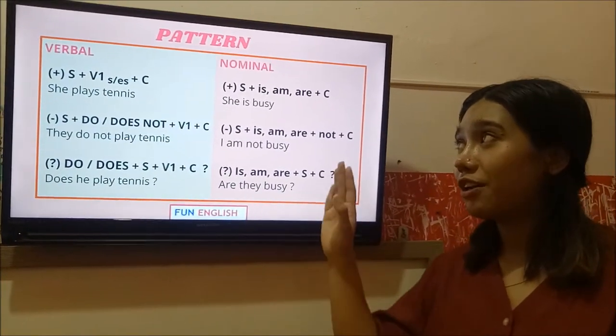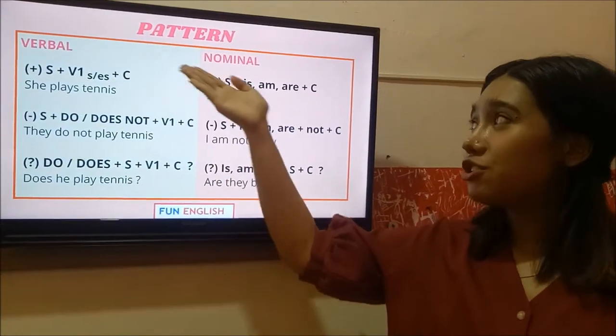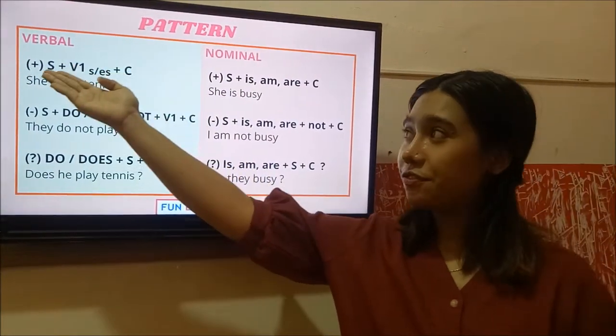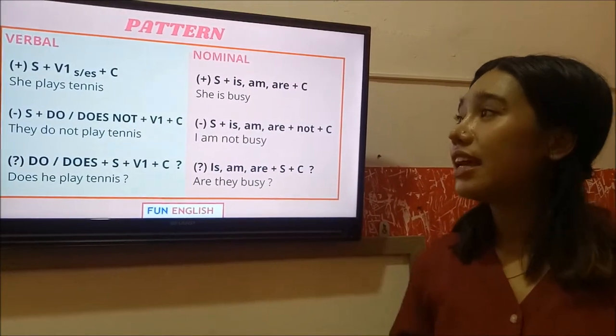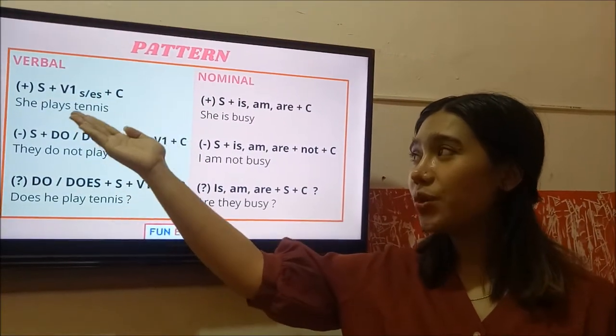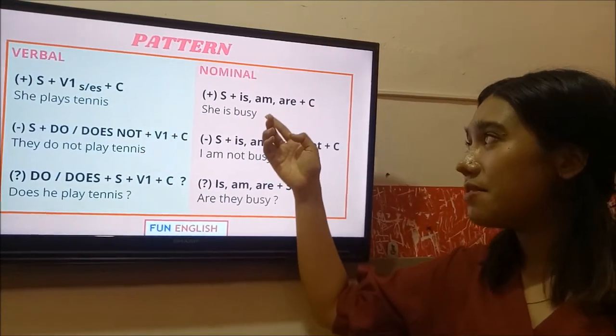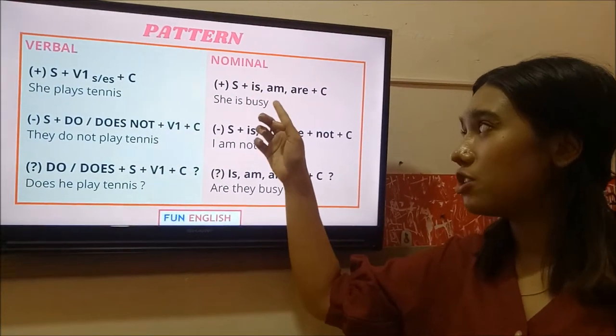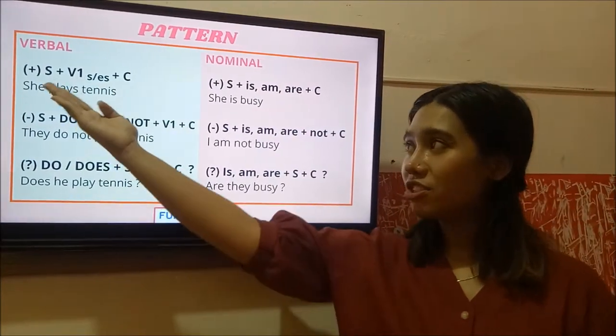And we talk about the pattern of simple present tense now. There are two patterns for it. The first one is verbal and the second one is nominal. In verbal, you will see verb here. Meanwhile, in nominal, you will not see verb, but you will see to be. Okay, let's start with verbal.